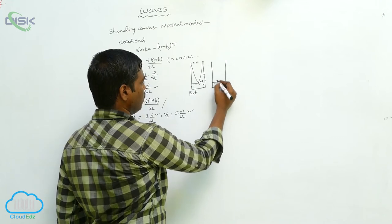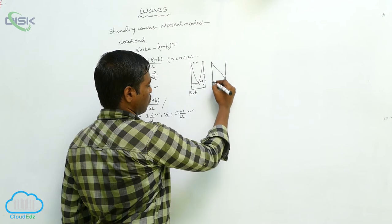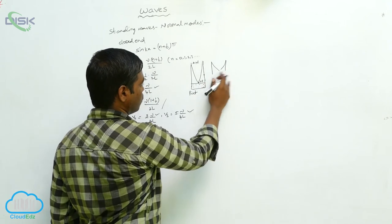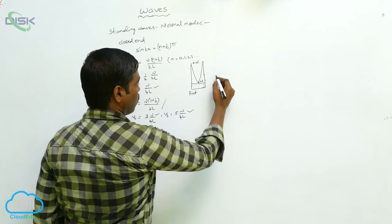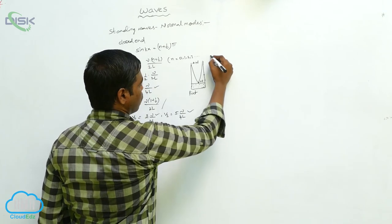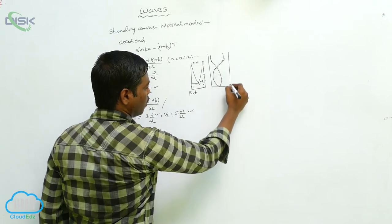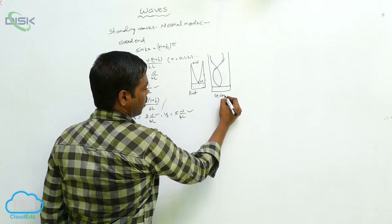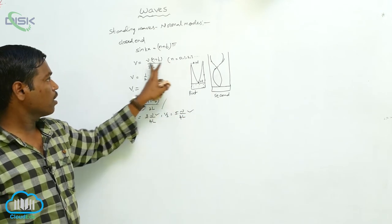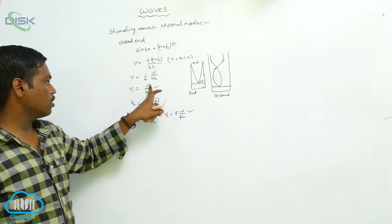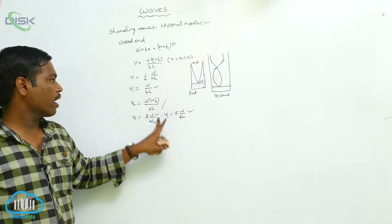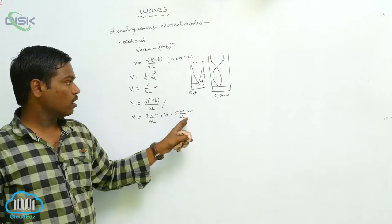When the water level is changed, we get the second harmonic. So we get harmonics as only odd multiples: ν₁ = v/4L, ν₂ = 3v/4L, ν₃ = 5v/4L. If we take the ratio, we get 1 : 3 : 5 : 7, and so on. These are the ratios of standing waves produced in a closed end.